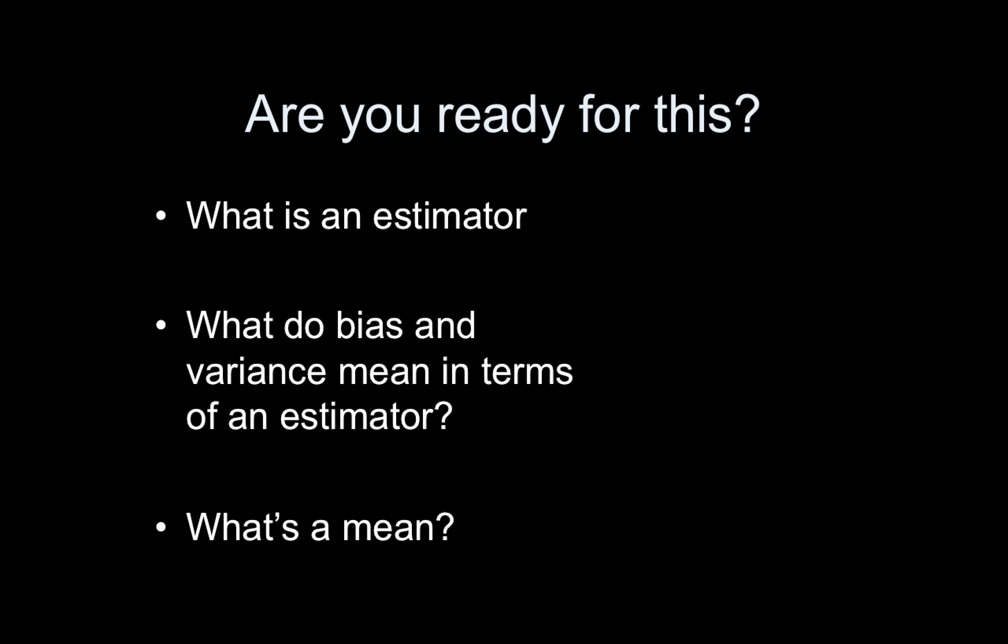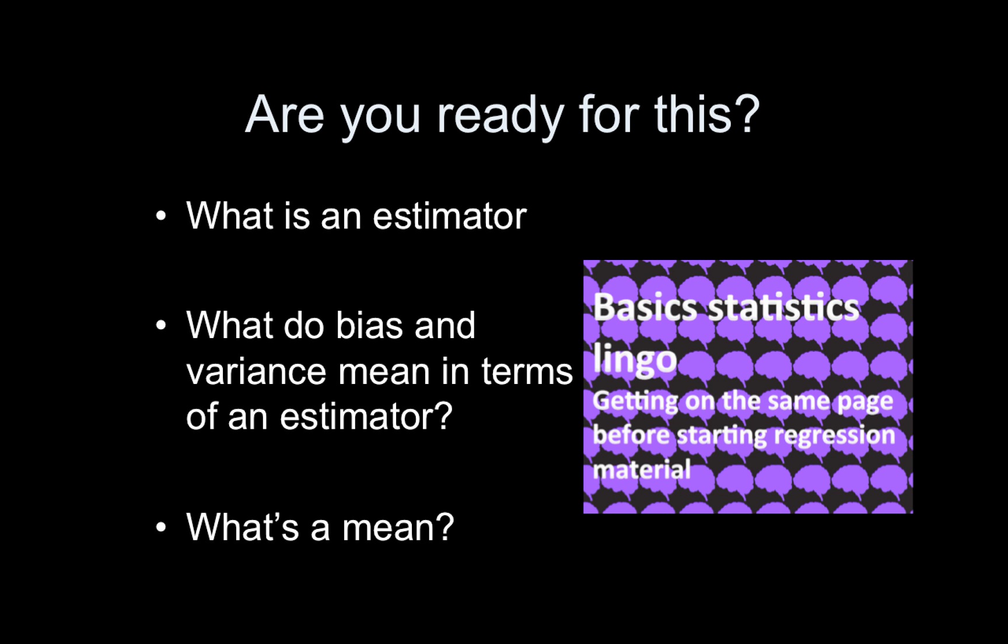So let's first check that you're ready for this. You should know by now what an estimator is, and in terms of an estimator what do bias and variance mean, and just generally what's a mean or an expected value and variance. So if you're not sure about one of those, then check out the basic statistics lingo video. It's only about 15 minutes long and just do a quick review of that before continuing.